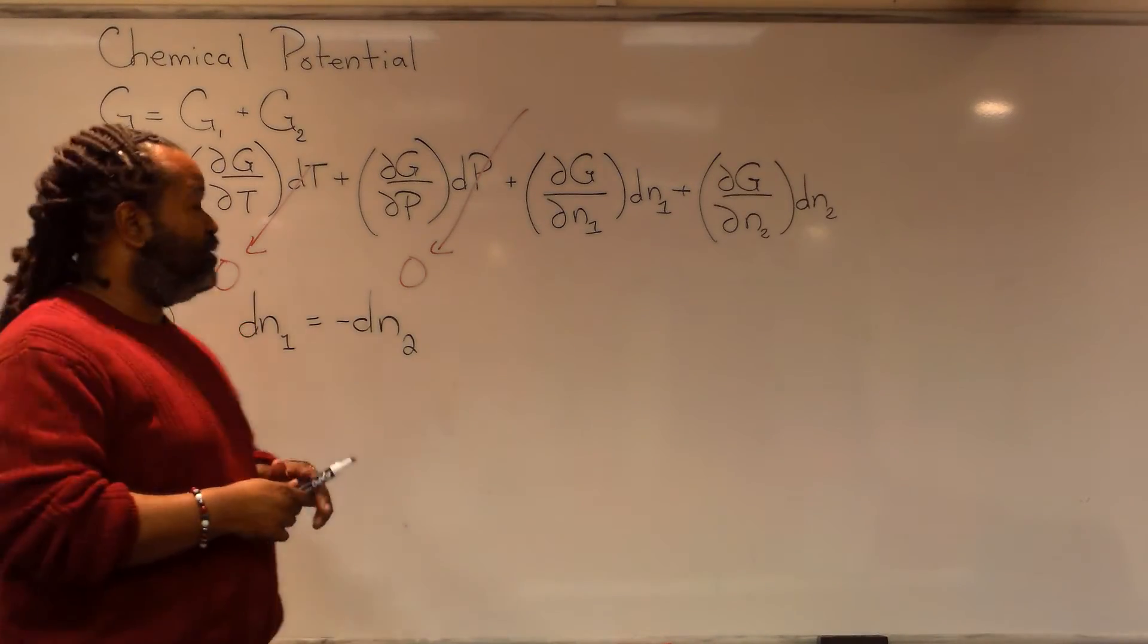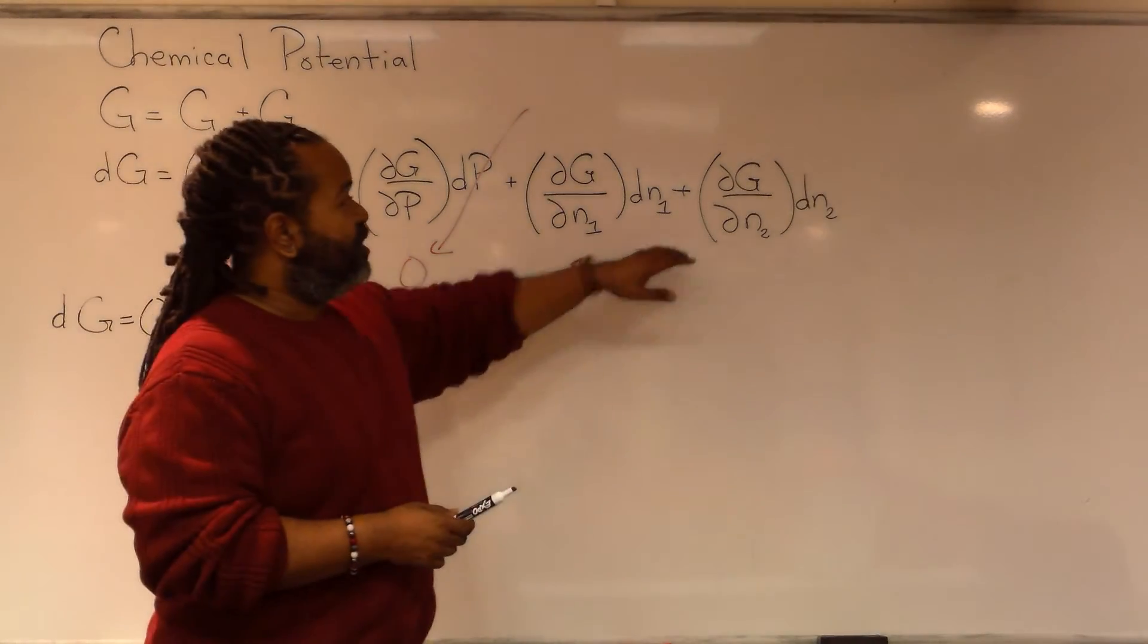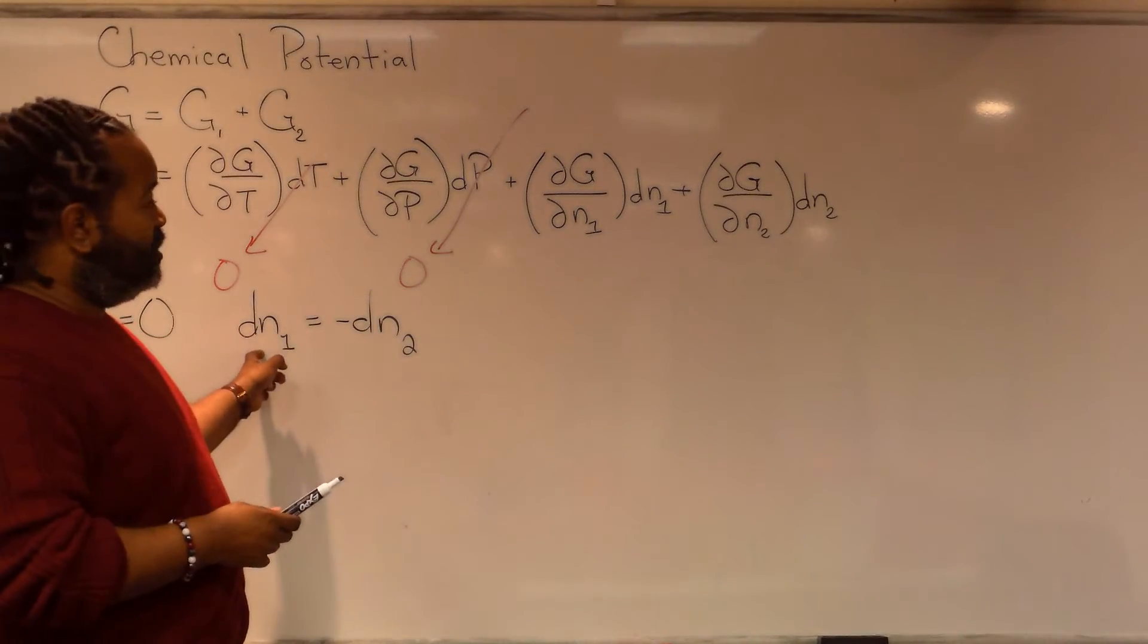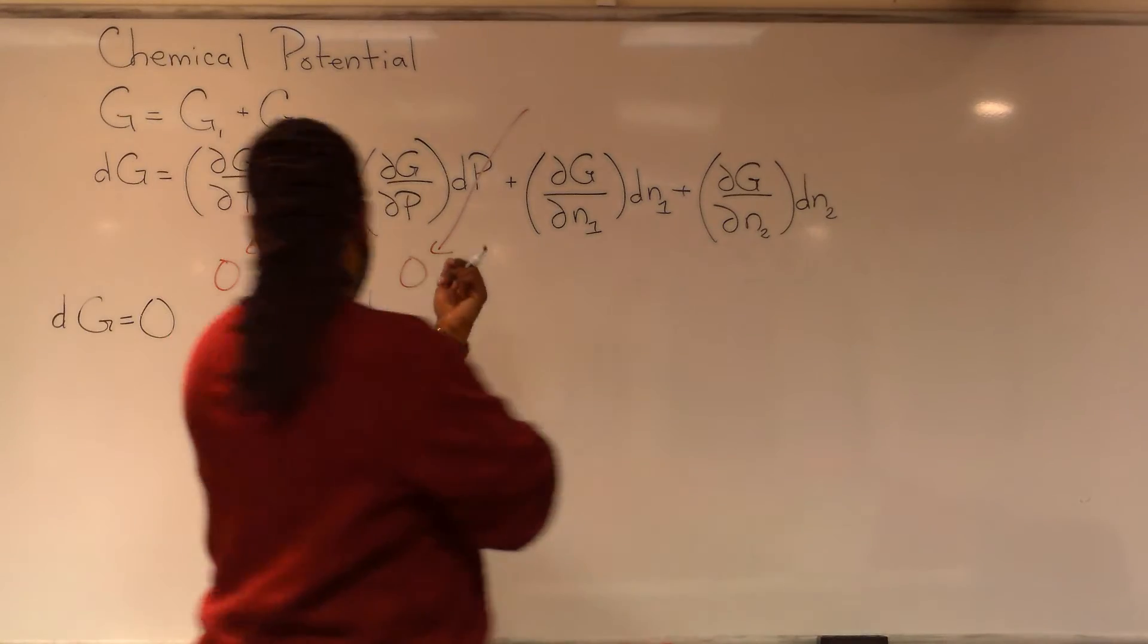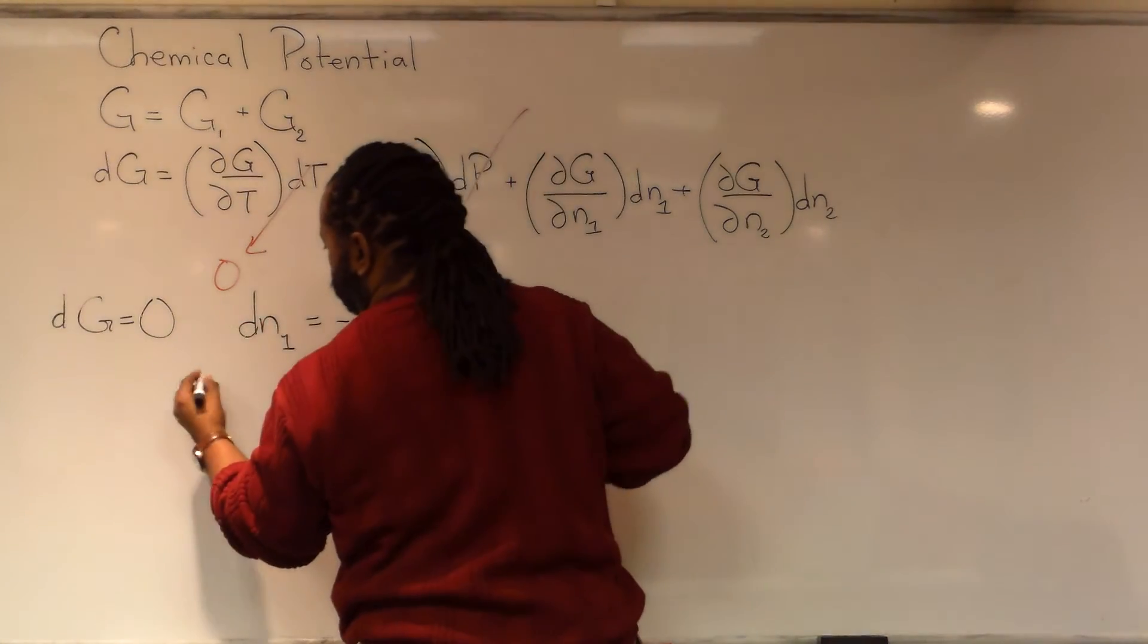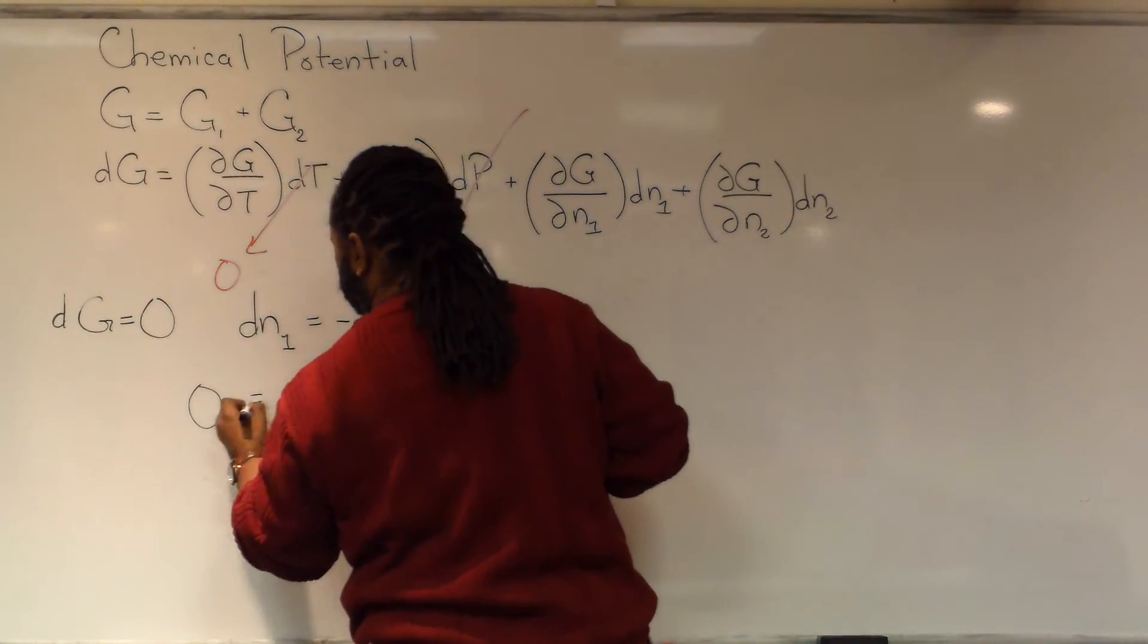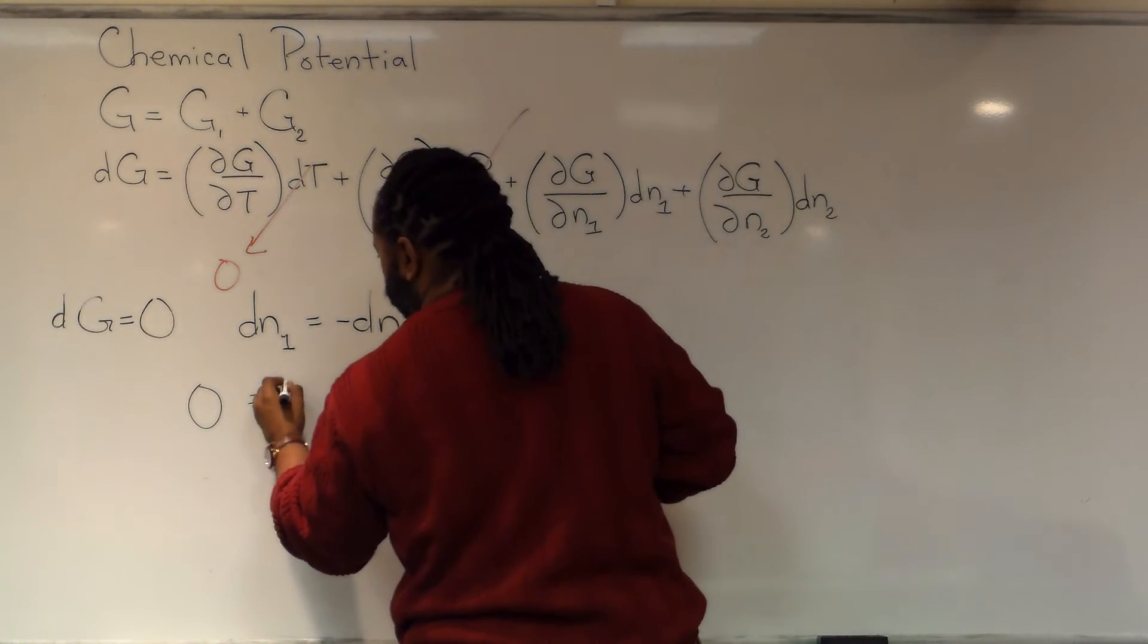So at this point it's possible to take these remaining terms and we can replace either dn1 or dn2 with the other. So as a result, we're going to substitute in for zero here and I'm going to write the following: